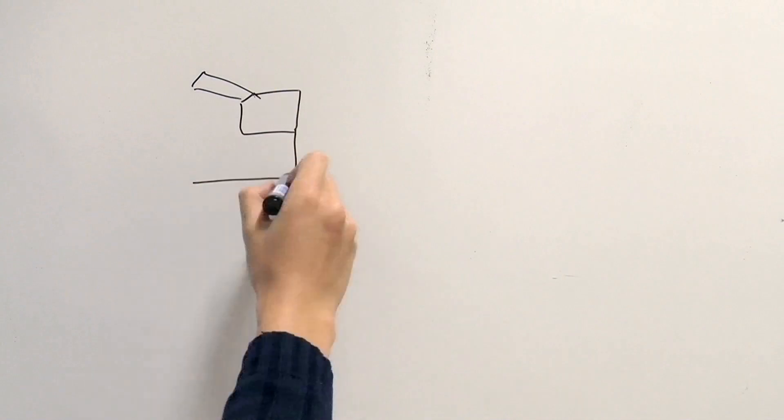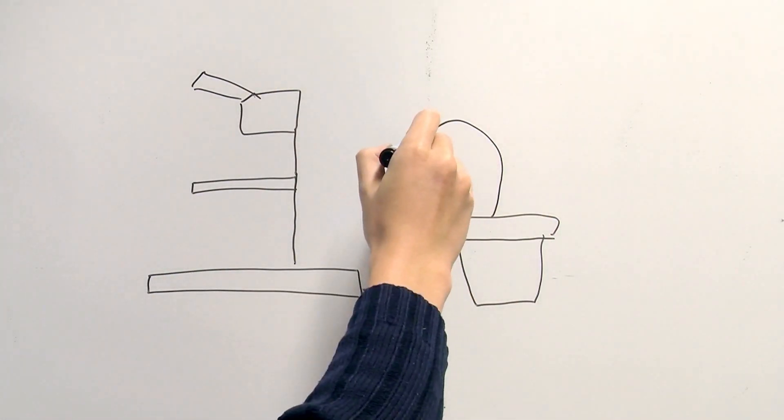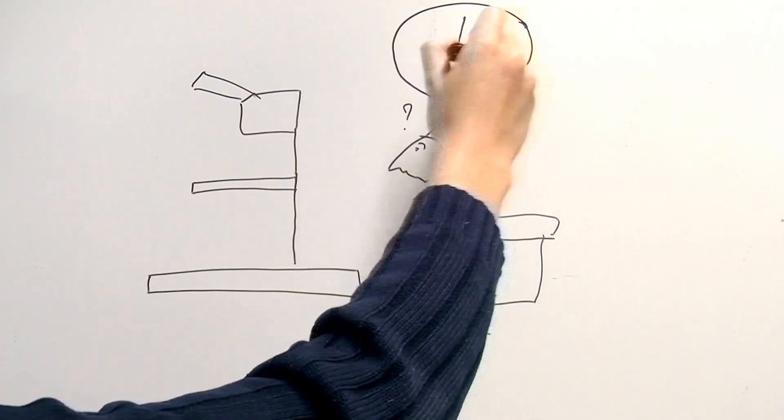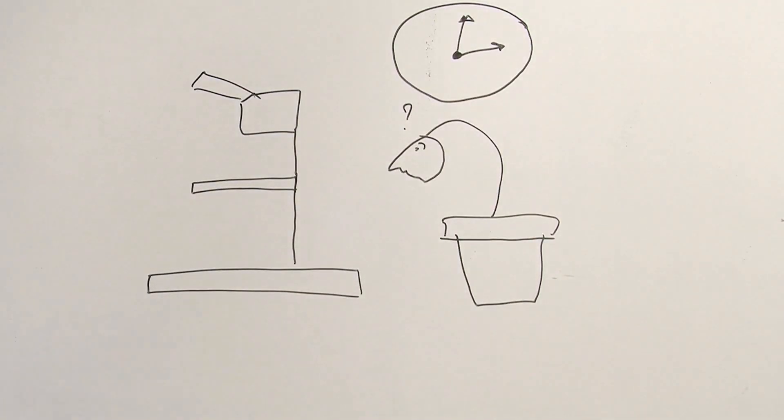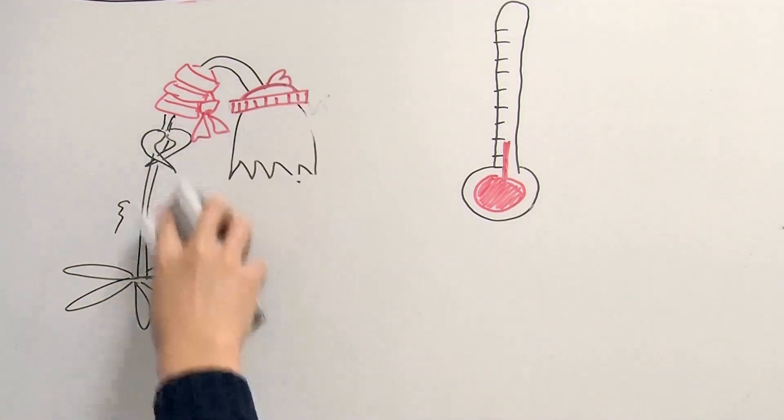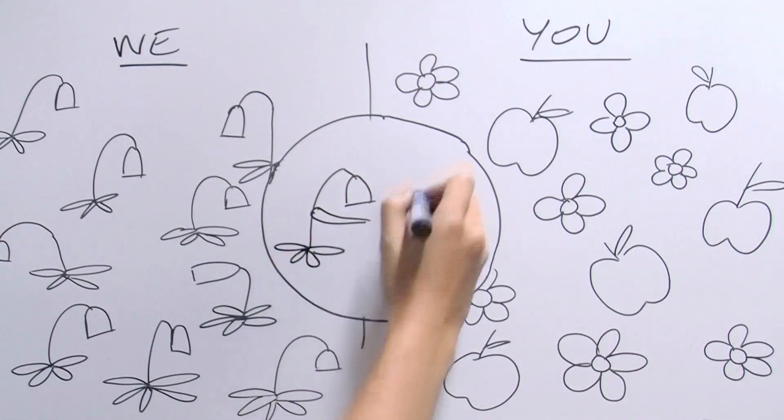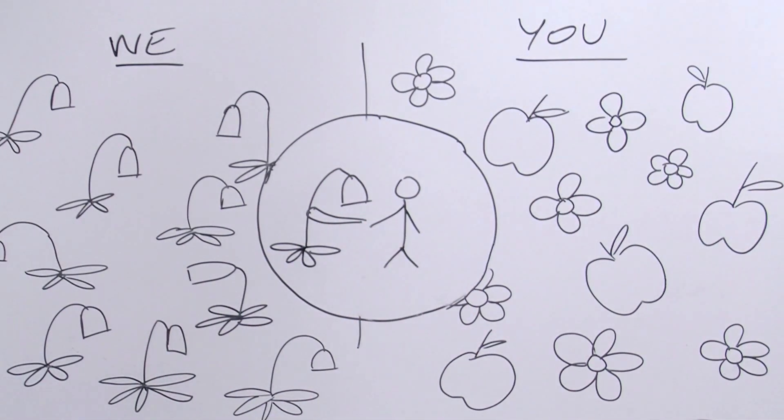Scientists are working hard to understand when and how we flower. Once they have an answer, they can help us. Maybe give our children scarves and hats to keep them warm and protect them from the cold. This way we both get what we want. We get more children and you get more food.